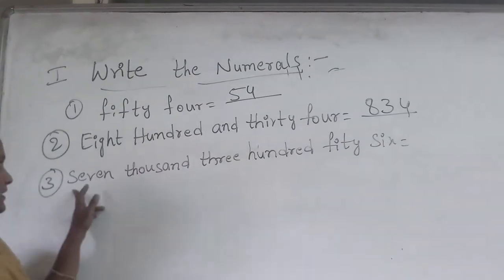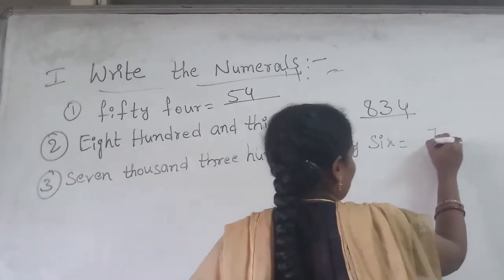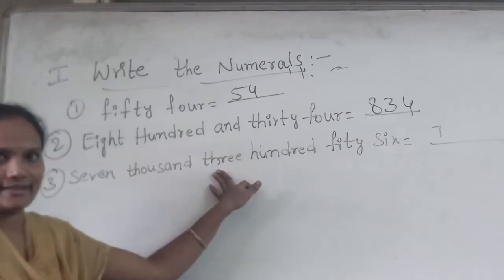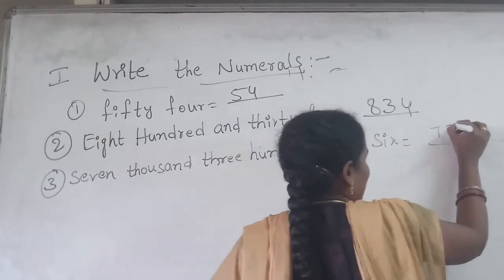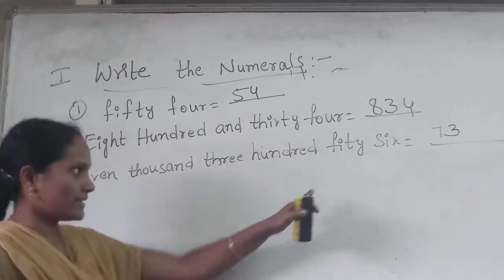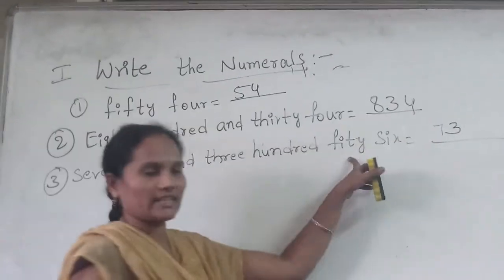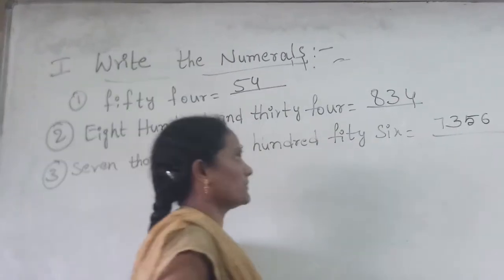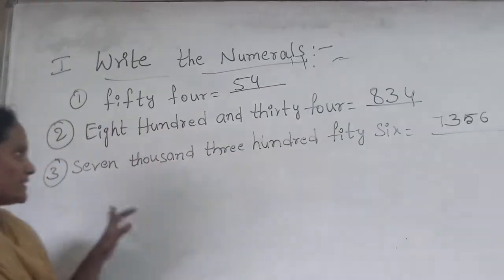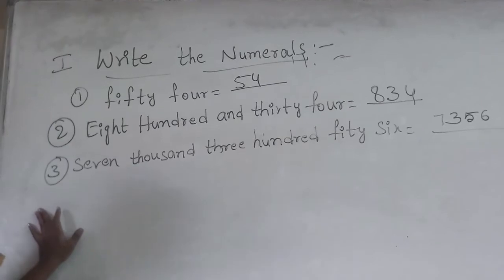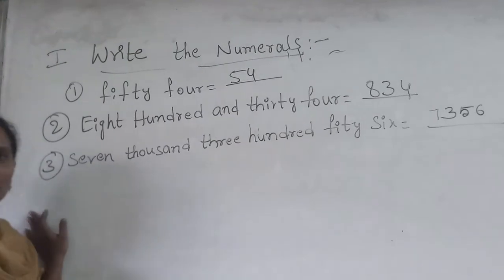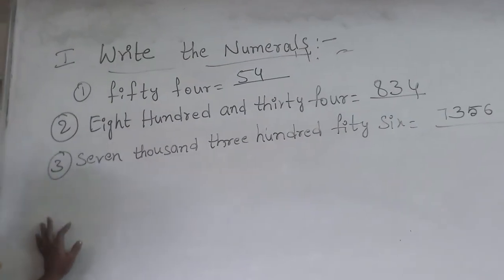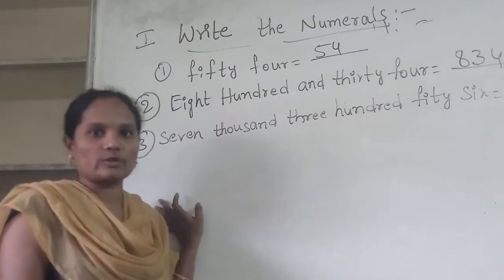Numerals: 7,000. From 7,000 the word 'thousand' comes. 300. Next, 56. Okay children, whatever I write on the board, please note down your class work. If you have any doubt, update in our WhatsApp group.